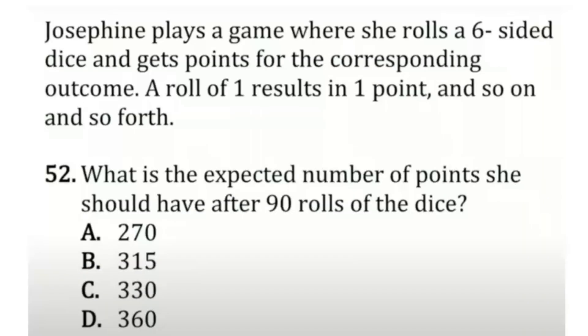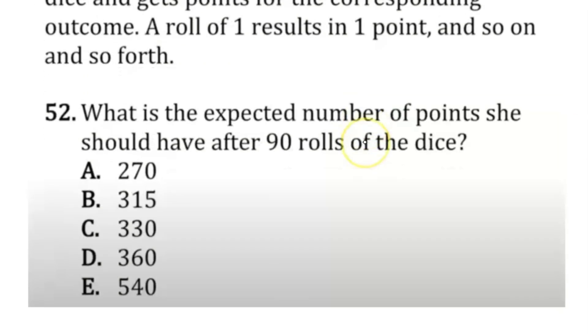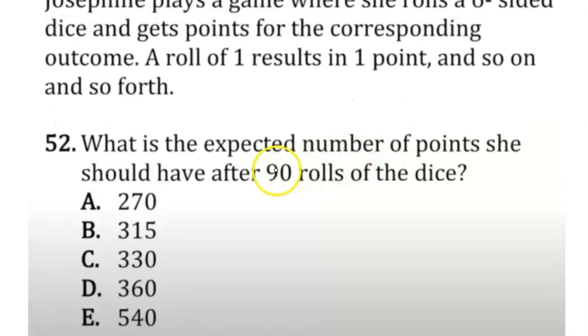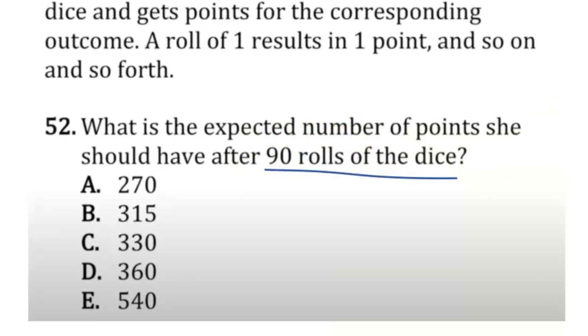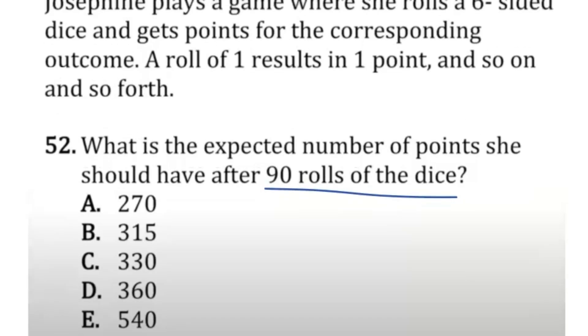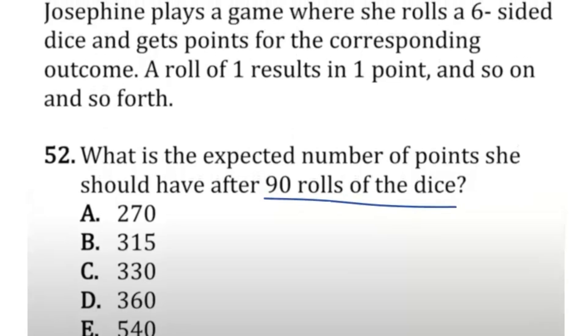It says Josephine plays a game where she rolls a six-sided dice and gets points for each corresponding outcome. A roll of one results in one point, and so on. What is the expected number of points she should have after 90 rolls of the dice? If you take AP stat, this one should be pretty easy. This is what we call a discrete random variable. Basically, we have a six-sided dice.